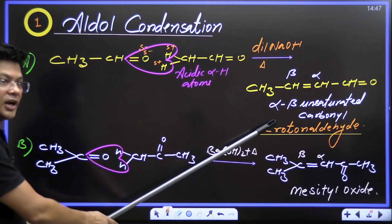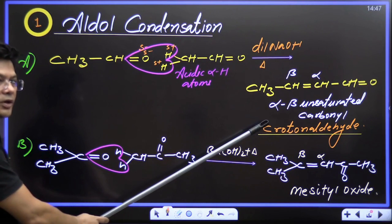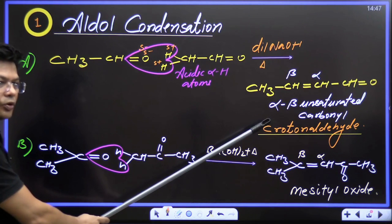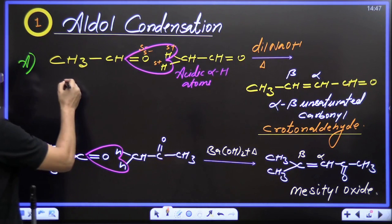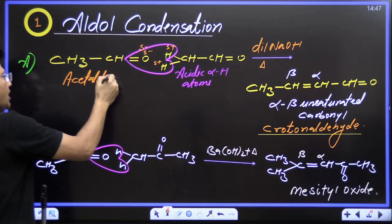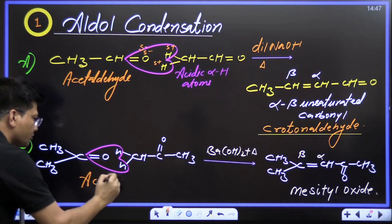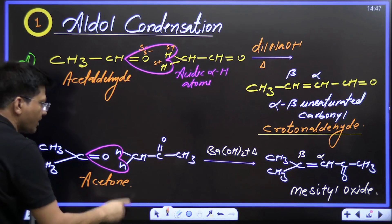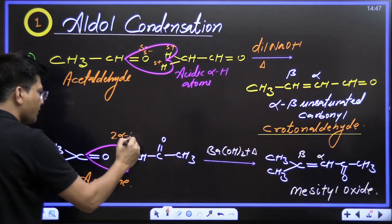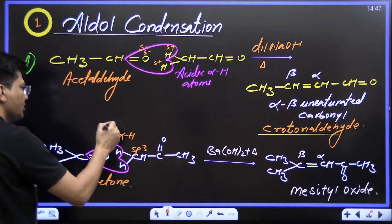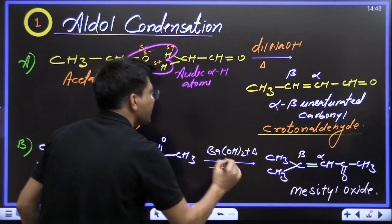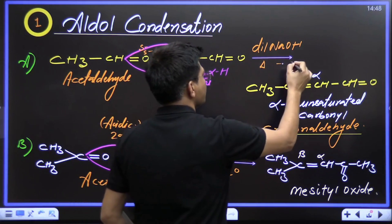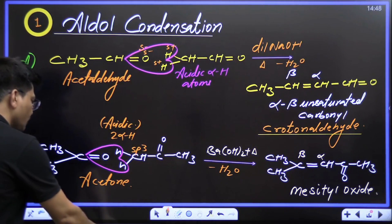The name of this product — the general, trivial name — is croton aldehyde. They are not going to give you the IUPAC name; they will ask the trivial name, croton aldehyde. The other reactant is a ketone — acetone. Earlier one was acetaldehyde. Whether it is aldehyde or ketone, if it has two alpha hydrogen atoms on an sp3 hybridized carbon, they are acidic alpha hydrogen atoms. Just remove water and get the product — also alpha, beta unsaturated.